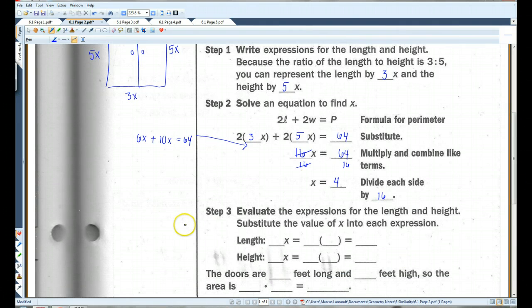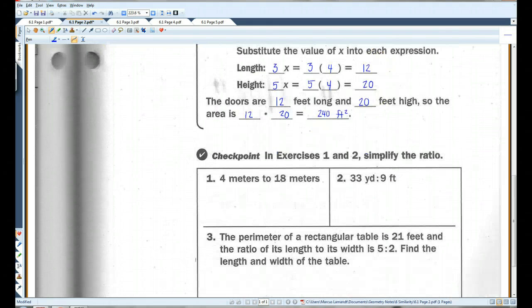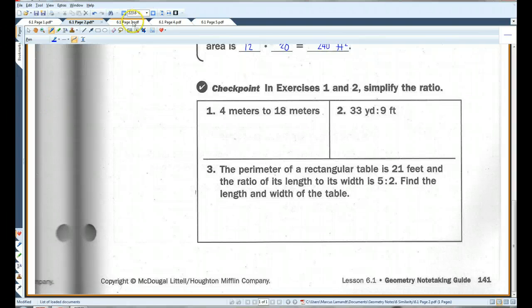So we know that the length was 3x and the height was 5x. And x equals 4. So 3 times 4 is 12, 5 times 4 is 20. So the doors are 12 feet long and 20 feet high. So the area is 12 times 20, which is 240 feet squared.